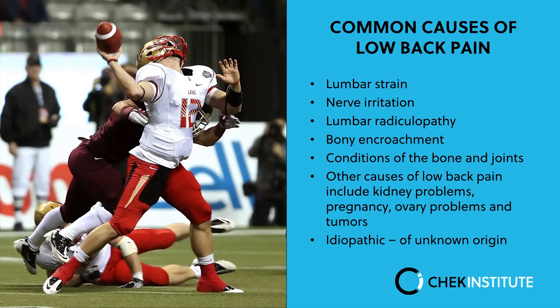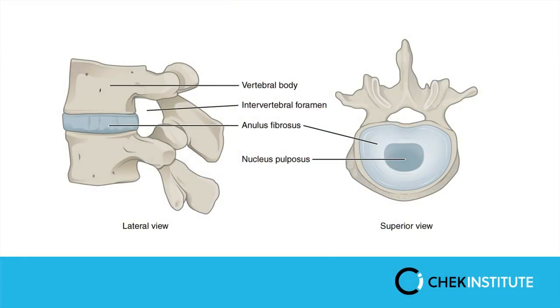Then you've got lumbar radiculopathy, where a disc becomes damaged and bulges or herniates, impinging onto a nerve. What tends to happen is the annulus fibrosus of the disc receives microtrauma over time, and if it doesn't heal effectively, those structures begin to weaken to the point where the nucleus pulposus can start to move through the annulus, causing the disc to bulge and irritate the nerve.